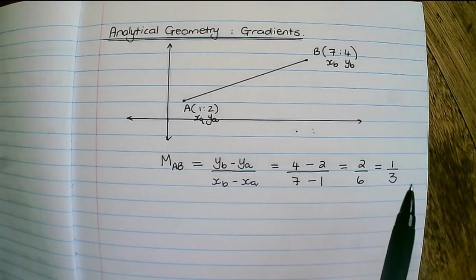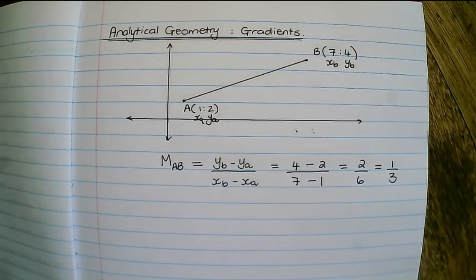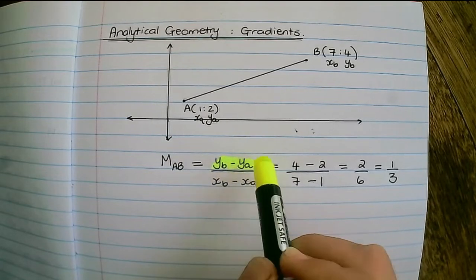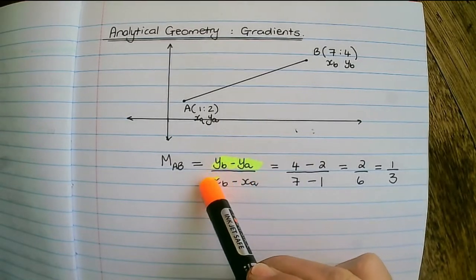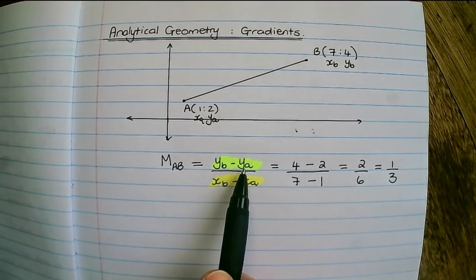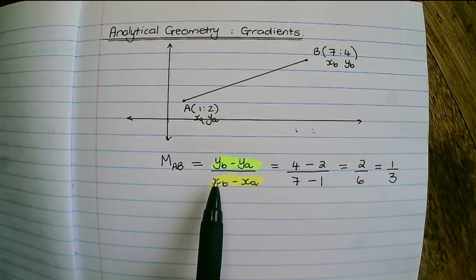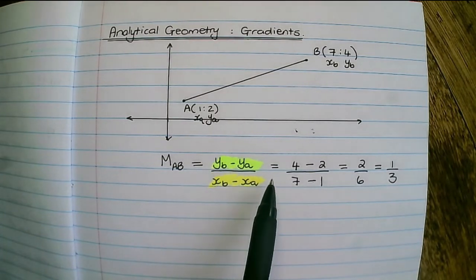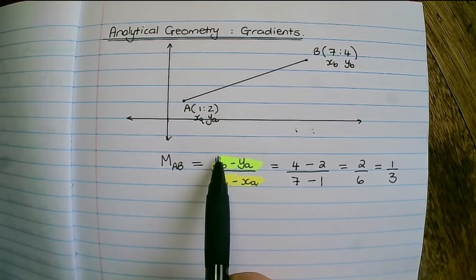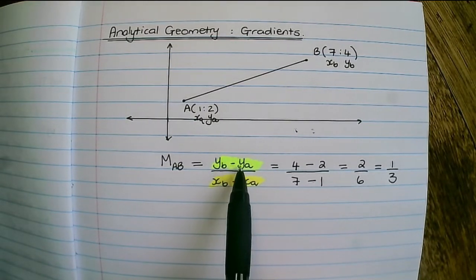Now some important things to remember: it's always the difference of y's over the difference of x's. You always need to place your difference of y's at the top over the difference of x's. Another thing to remember in terms of our substitution, if I place the y value of B first in my subtraction